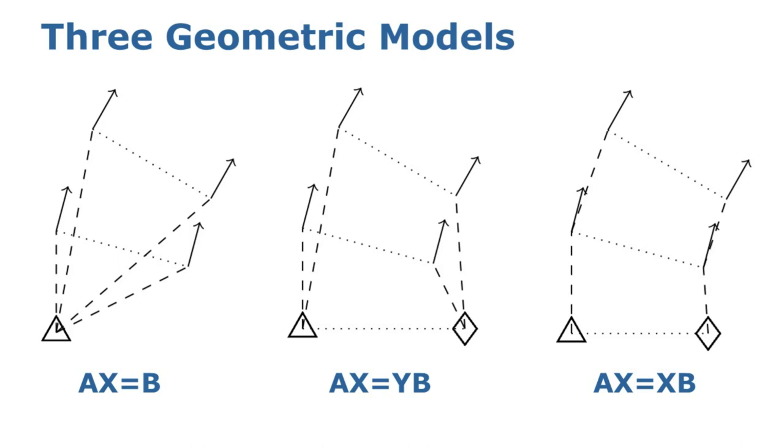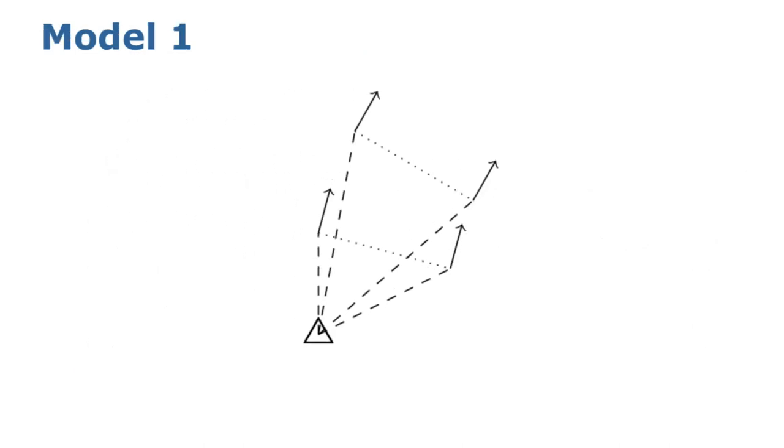According to the sensor configuration and calibration setup, common calibration problems can be represented by three geometric models as shown here. Take the first model for example. Assume we are calibrating two sensors, called A and B.